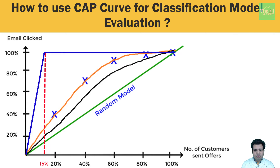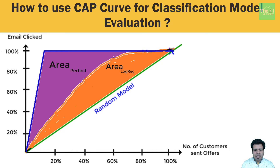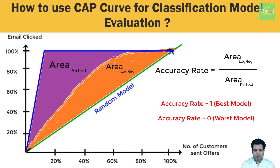Now let's draw some insights from this CAP curve. If our orange curve is closer to the blue perfect line, our model tends to be better; if it is closer to the green random line, our model tends to be worse. We will analyze this graph using two approaches. Approach one: first calculate the area under the curve for the perfect model — referred to as area_perfect. Then calculate the area under the curve for our model, in this case the logistic regression model — referred to as area_log_reg. Then calculate the accuracy rate by dividing area_log_reg by area_perfect. If this ratio is closer to 1, your model is really good; if closer to 0, your model is worse.